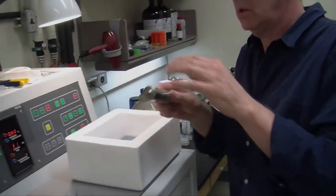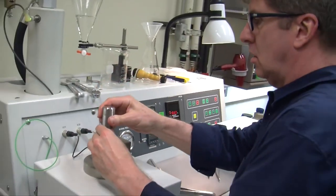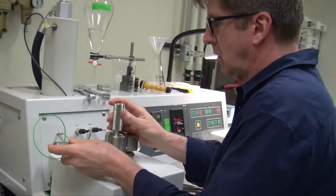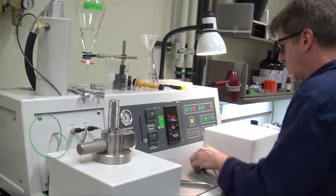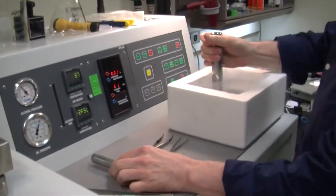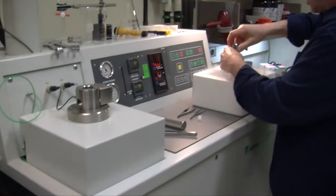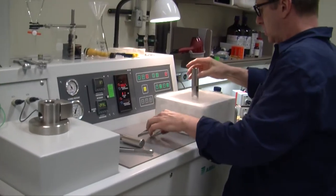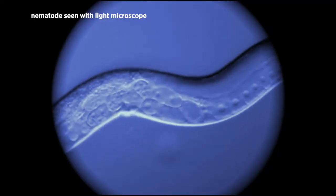So one piece of the equipment in the microscopy suite that we've been using a lot lately is the high-pressure freezing machine. Presently what we're using it for is to take nematodes and freeze them so quickly that they are frozen in vitreous ice.